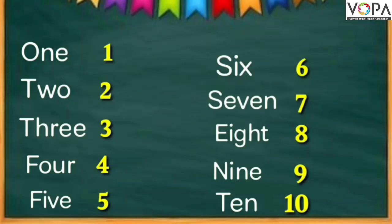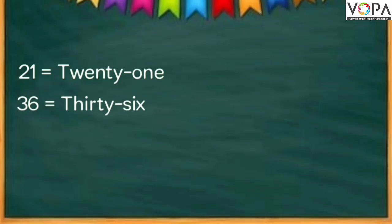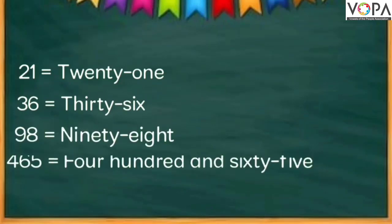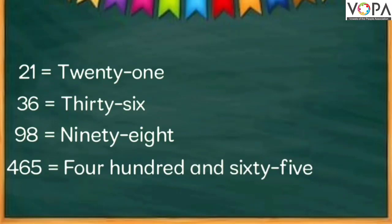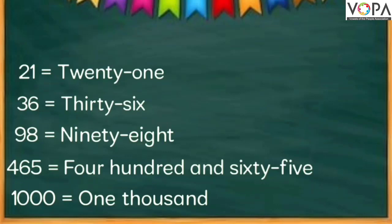It is important to know the spelling of these numbers. Examples: 21, 36, 98, 465, 1000. In this way, we will write other numbers.